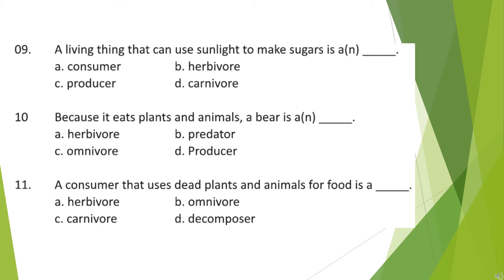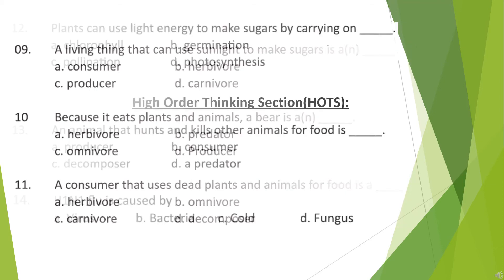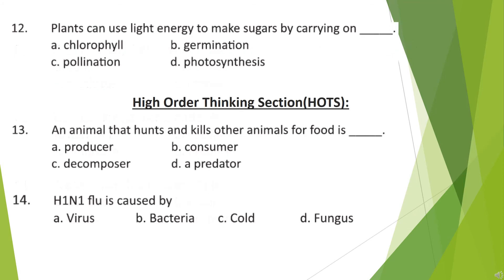Question 11: A consumer that uses dead plants and animals for food is a? Look at the options and choose your answer. Question 12: Plants can use light energy to make sugars by carrying on?